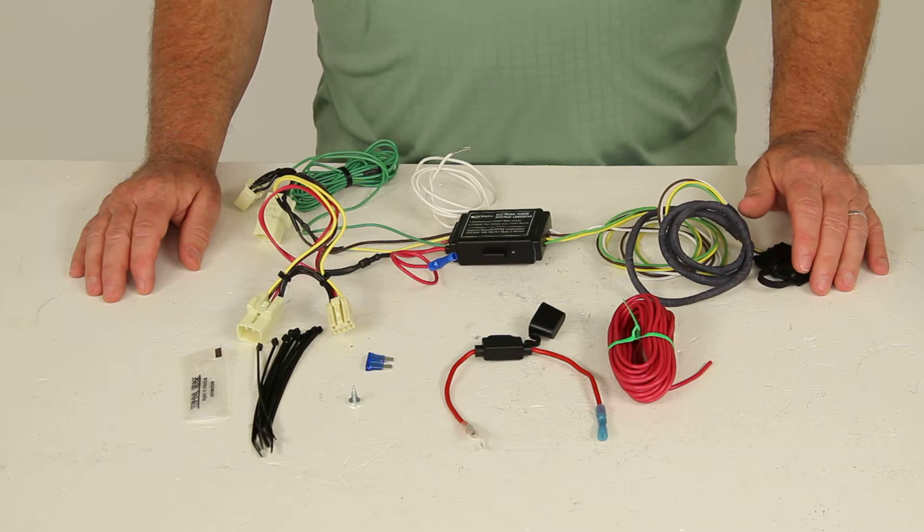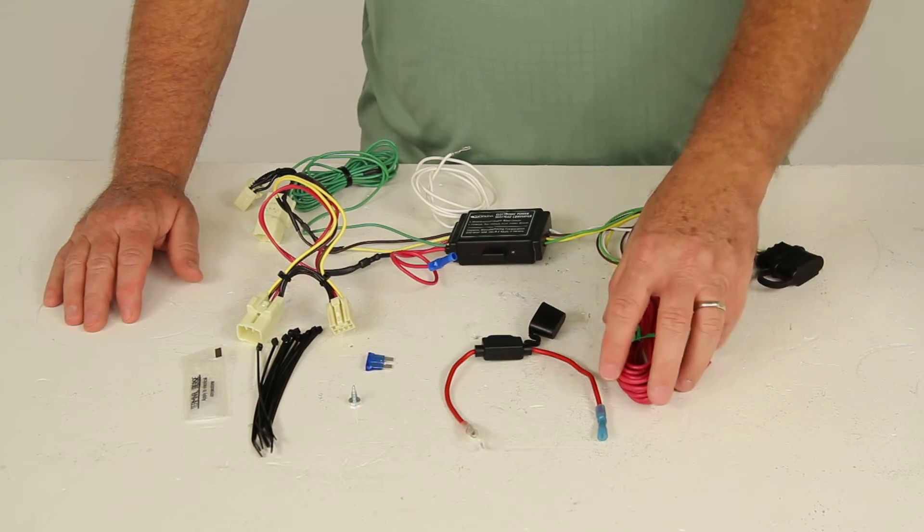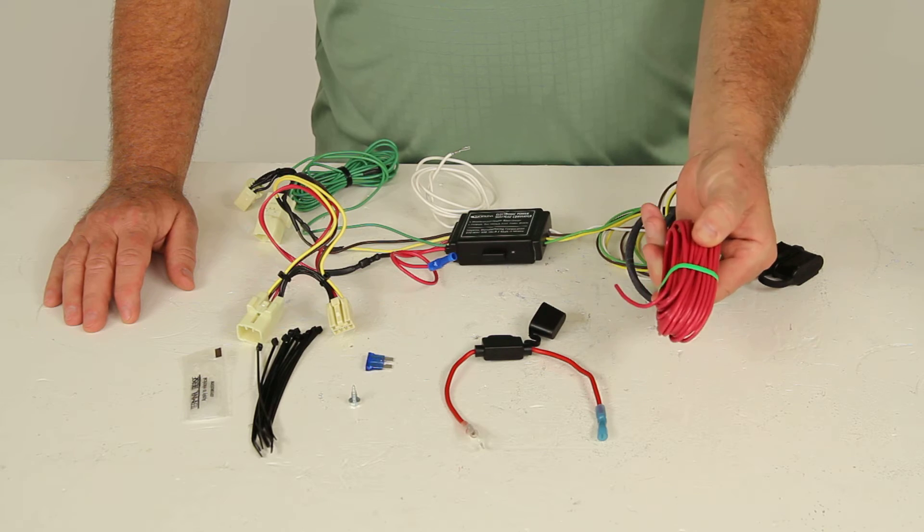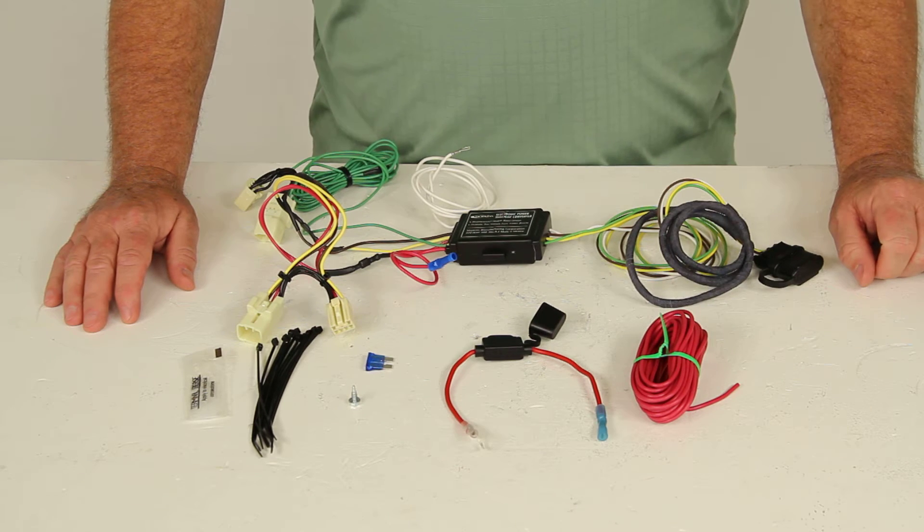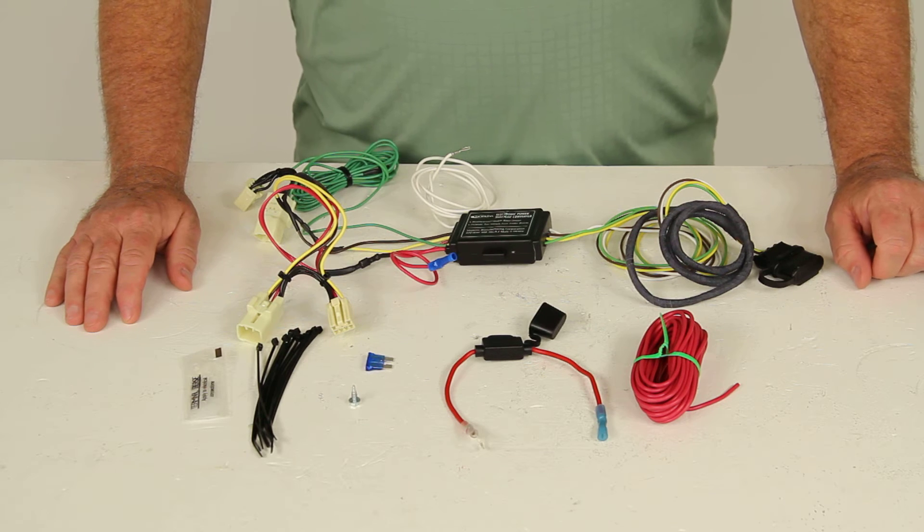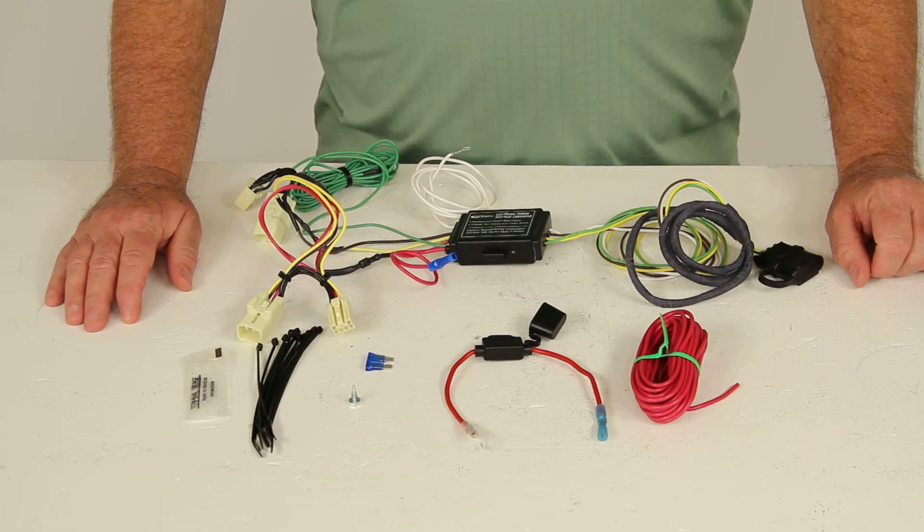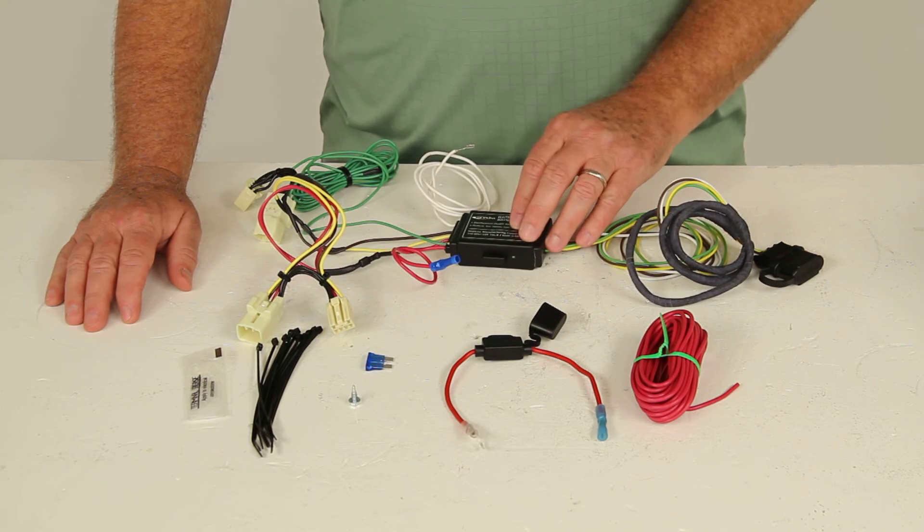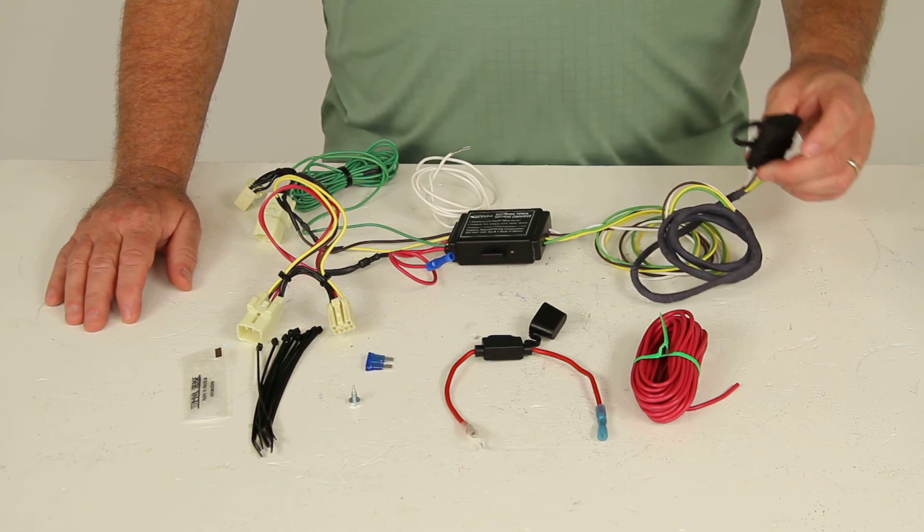But basically that's a way to show you how to connect this wiring harness to your vehicle, pretty simple to do. The only thing that would take a little more time would be running this wire to the front of your vehicle. But that should do it for the review on part number HM11143814, the Hopkins plug-in vehicle specific wiring harness with the four pole trailer connector. Thank you.